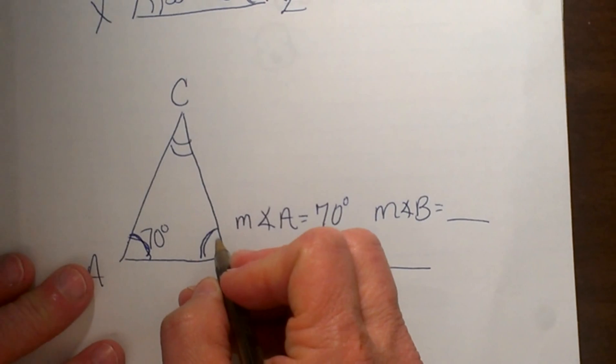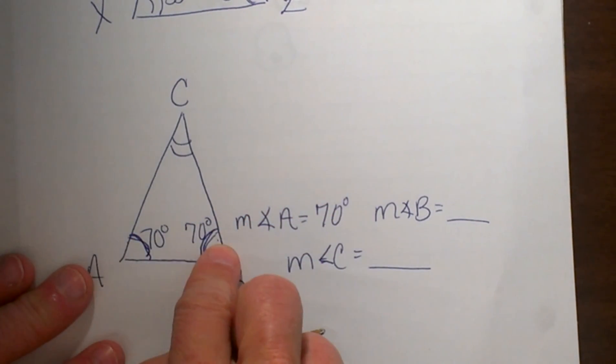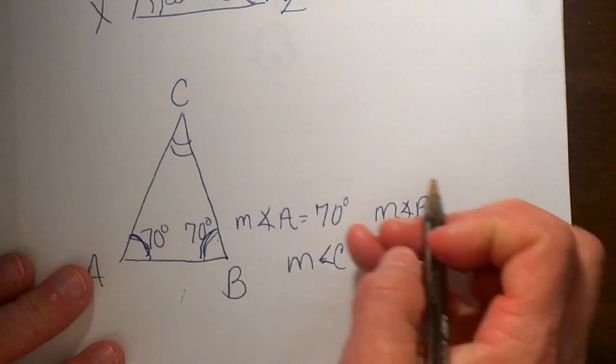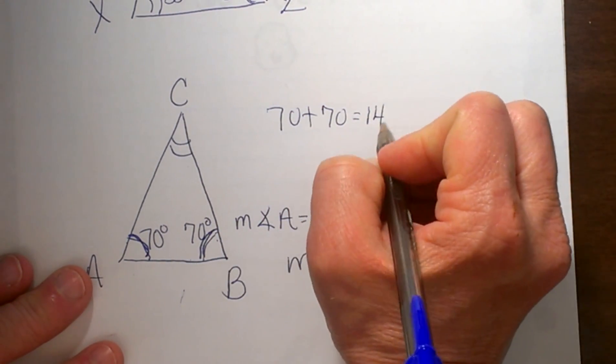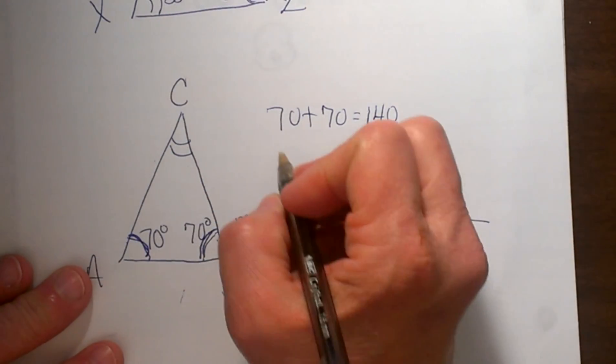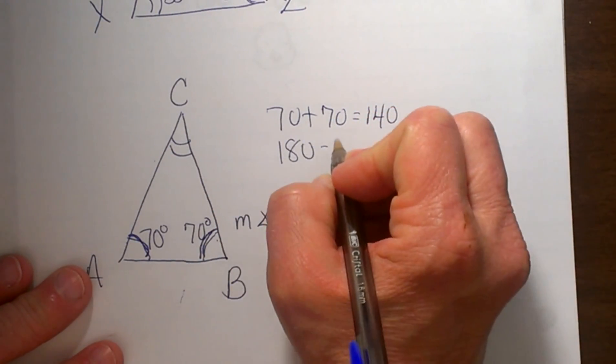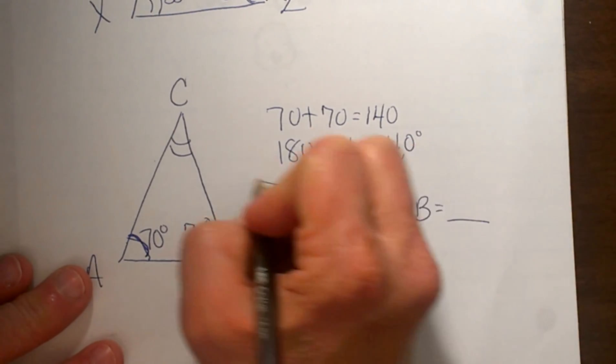We know that the other base angle must also be 70. So what is left over for that third vertex angle? Well, 70 plus 70 is 140. So we know we have 180 degrees. So what is left over? 180 minus 140 leaves us 40 degrees for our vertex angle.